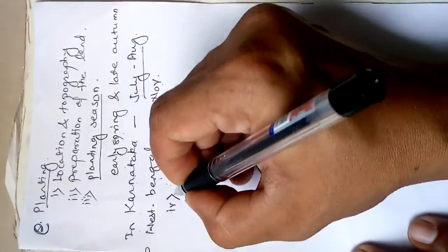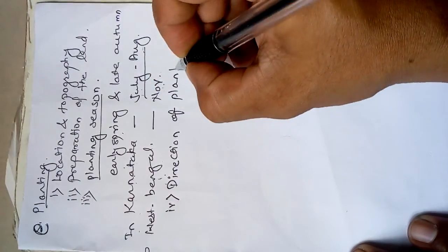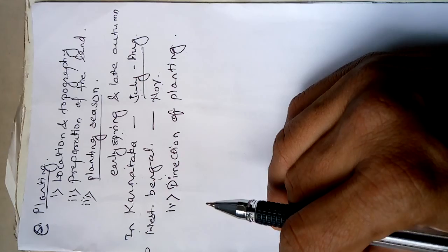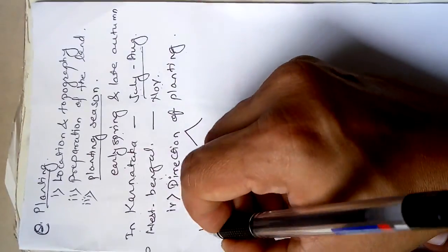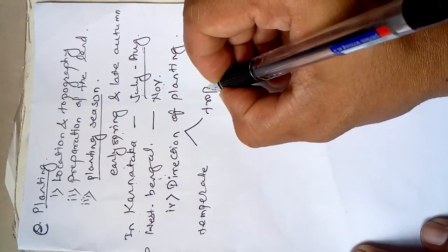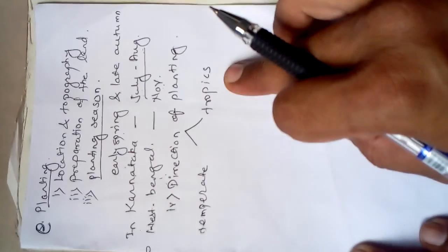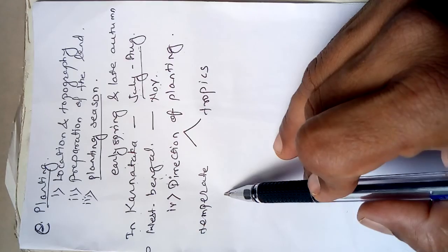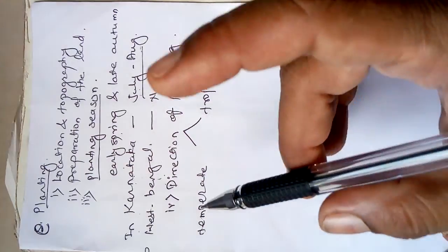The fourth point is the direction of planting. In the temperate region, the direction of the rows of planting is important. There are two different regions — the temperate region and the tropics — and the direction of planting differs between these two. In the temperate region, the direction of the rows depends on the intensity of light as well as the wind direction.